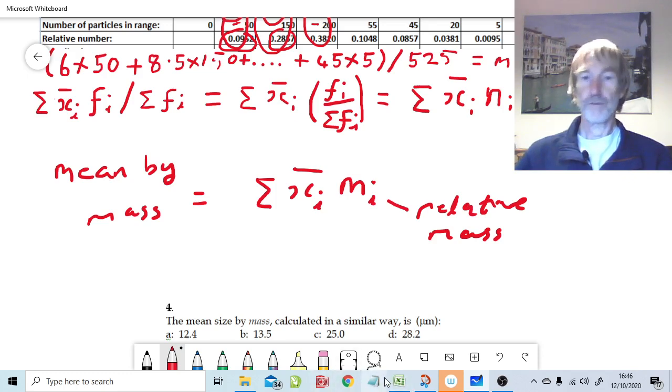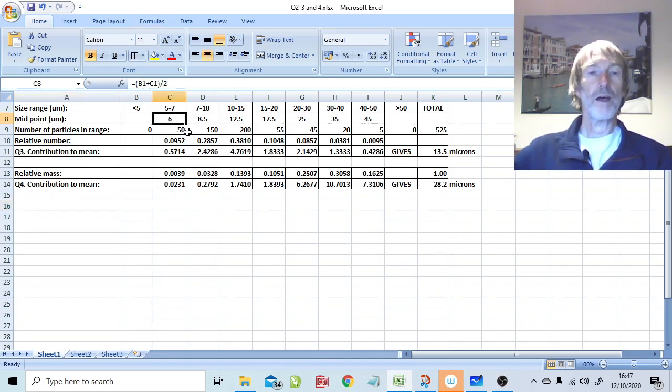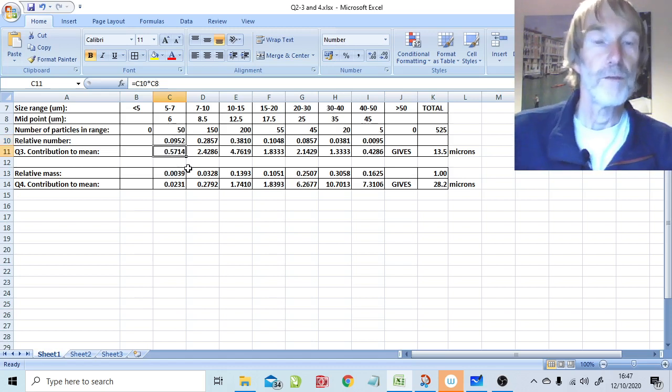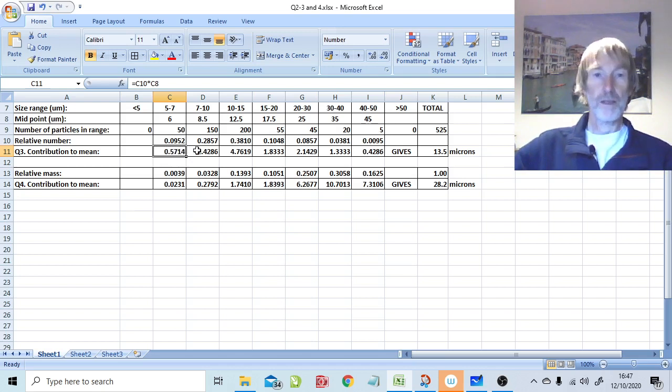Let's have a look at the values. Here they are. And here are our midpoints. Here are our number of particles, but we're not calculating it using that technique. We'll just use the relative number technique. So here are our relative numbers, and what I called n_i on the worksheet. And here is our contribution to the mean. And you can see the number distribution mean has a reasonably high contribution from the lower values, because there's a lot of particles in those lower sizes. If you sum them all up, you get an answer of 13 and a half microns.